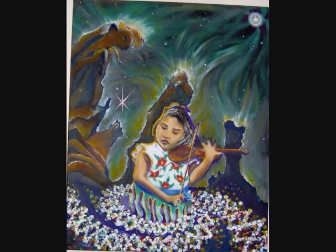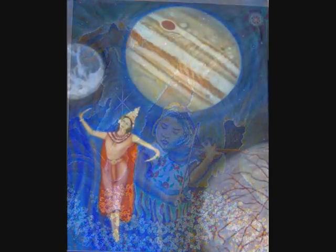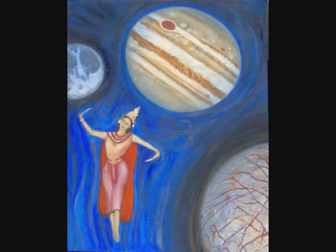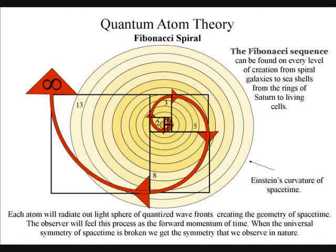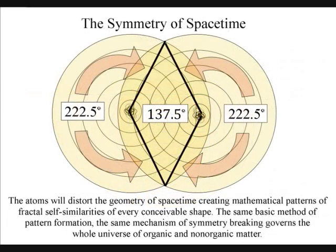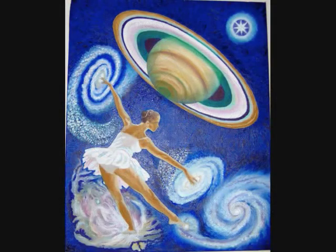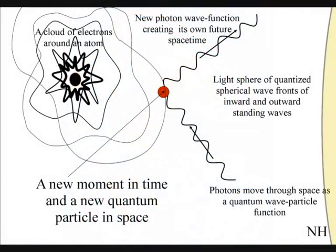Within our universe we see patterns of a beautiful symmetry, both in nature and in mathematics. The same basic method of pattern formation can be seen in all living systems and non-living ones. Nature's symmetry can be found on every level of creation, from spiral galaxies to seashells, from the rings of Saturn to living cells. There has to be a general principle underlying such universal symmetry.